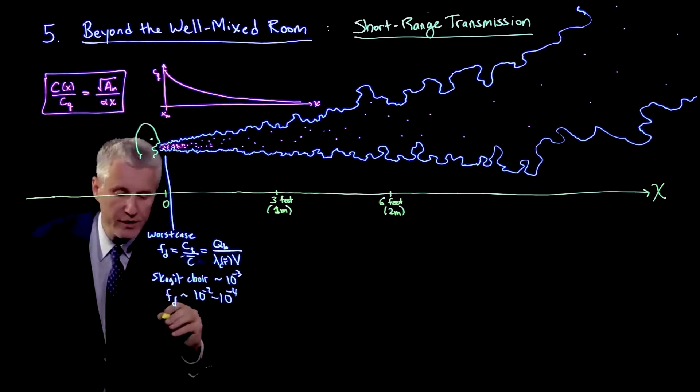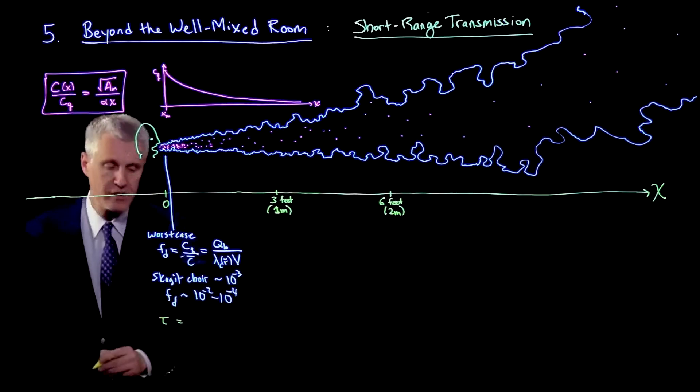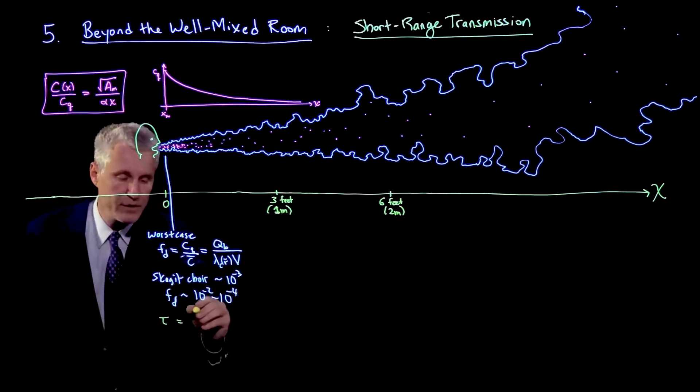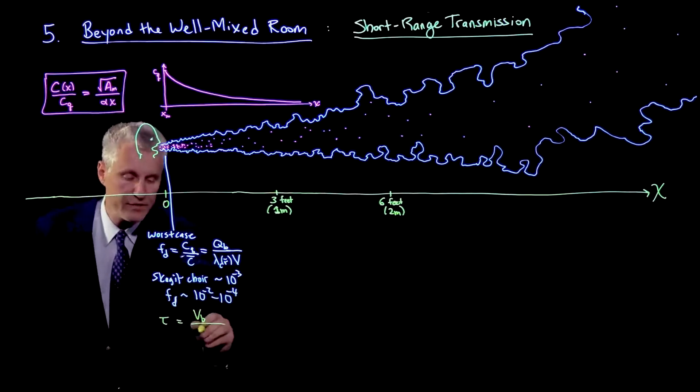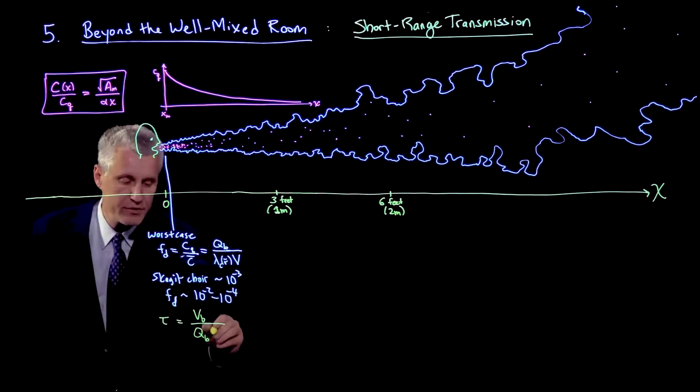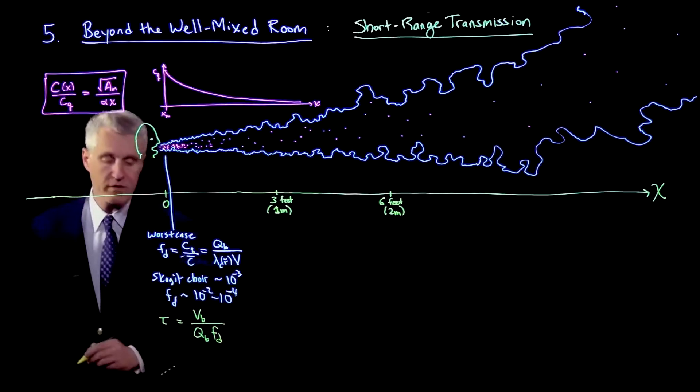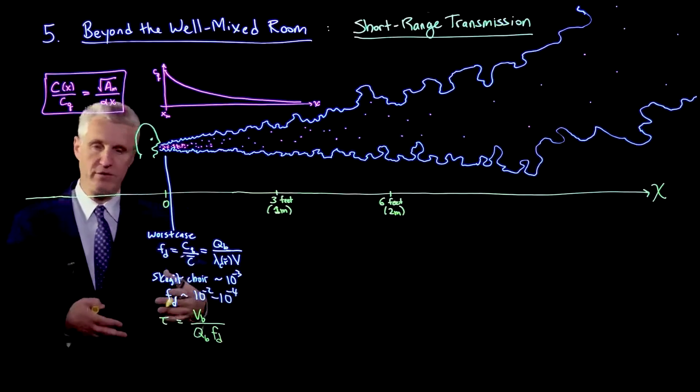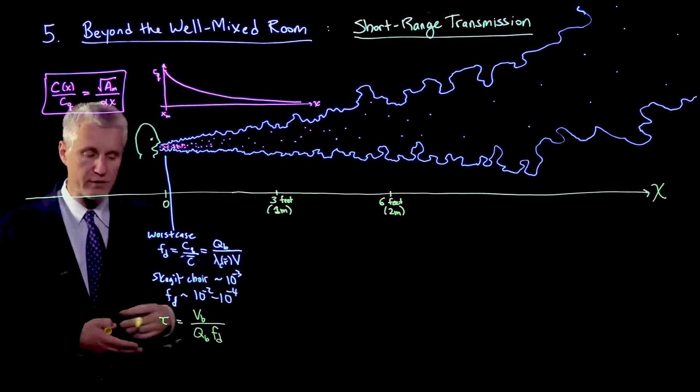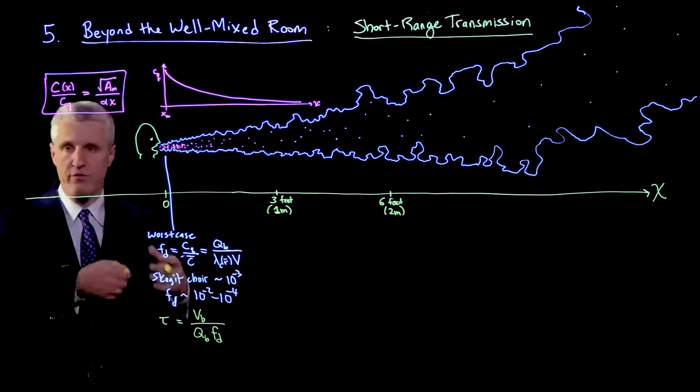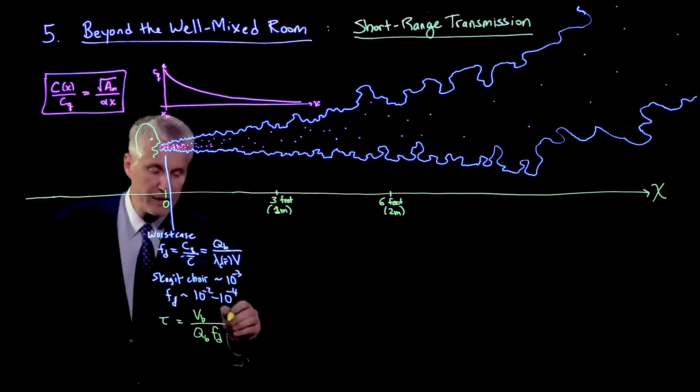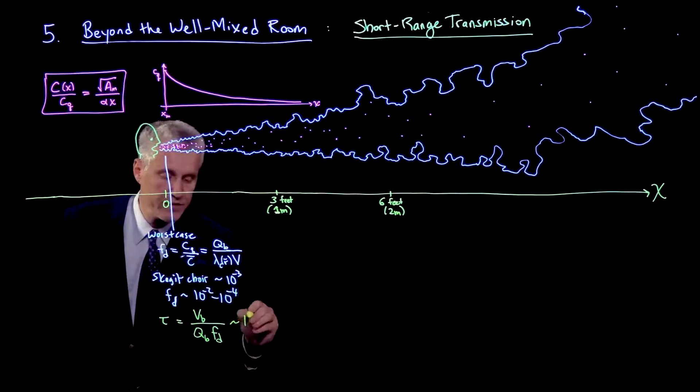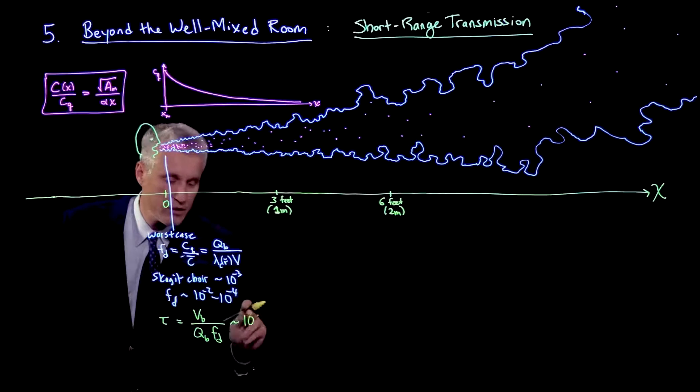If we calculate it as a timescale, taking the volume of a single breath Vb and dividing by Qb times the dilution factor Fd, that is the time you would have to spend breathing the background air to achieve the same dose. This quantity ends up being for the Skagit choir around one hour.